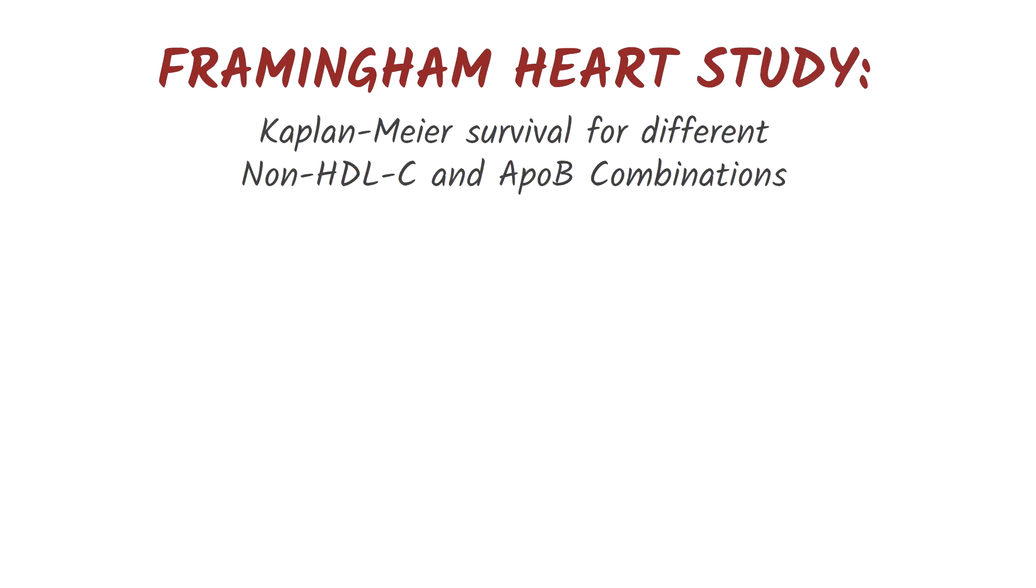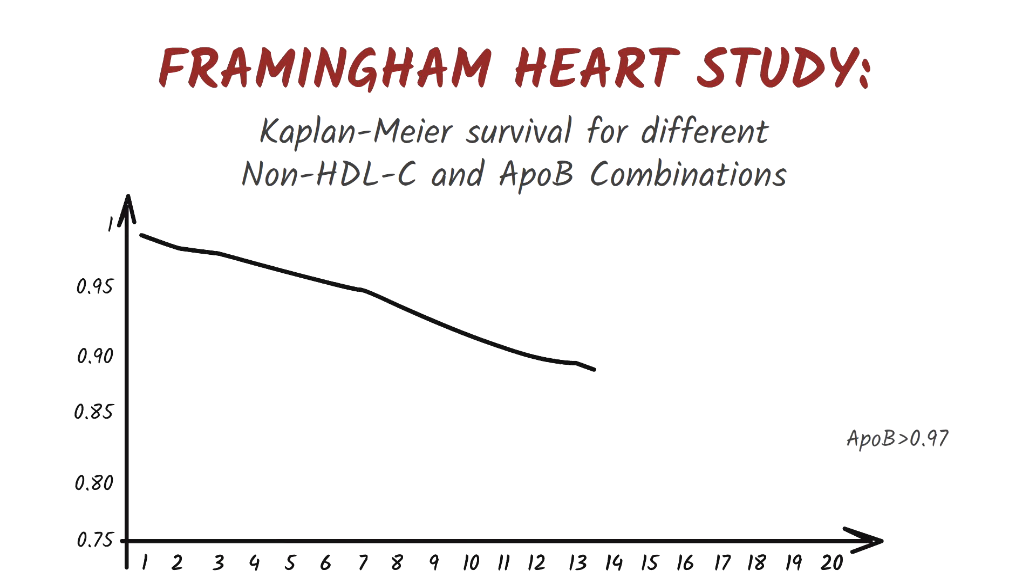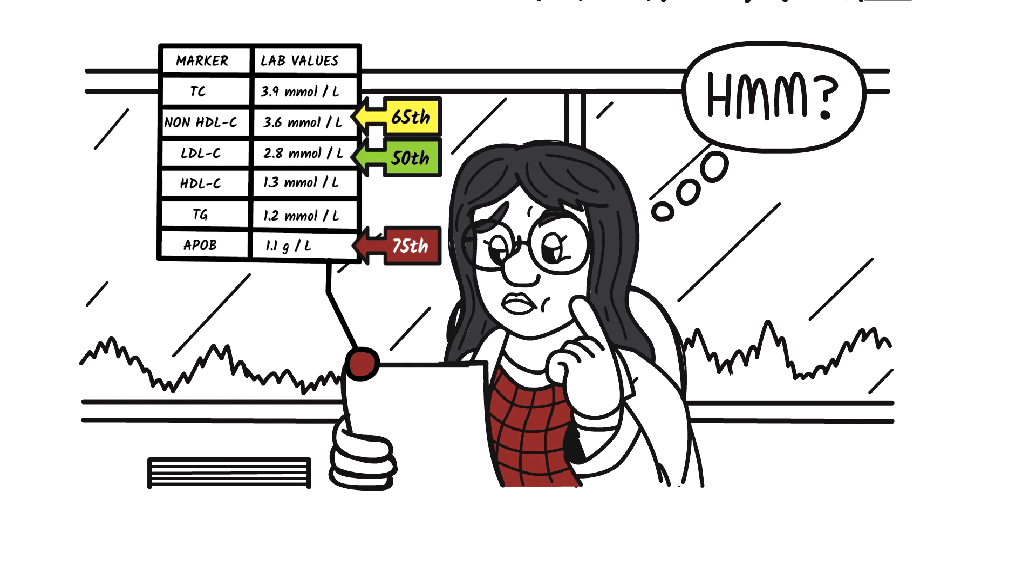The Framingham Heart Study examined survival rates for patients with different non-HDL and ApoB combinations. It revealed that people with higher ApoB have lower survival rates than those with lower ApoB levels, even though their non-HDL-C or their LDL-C were the same.